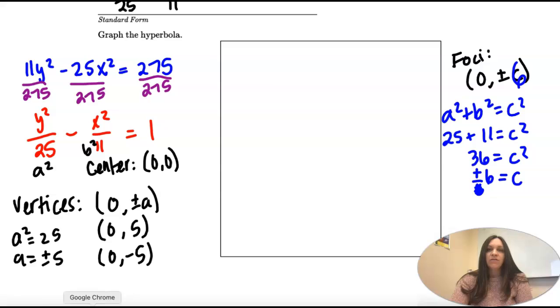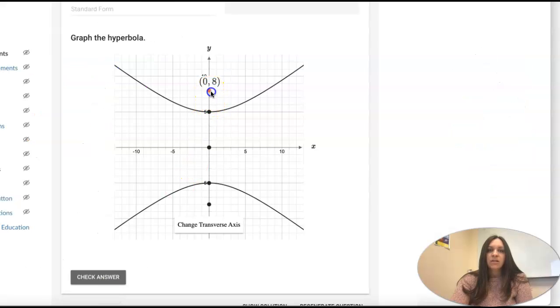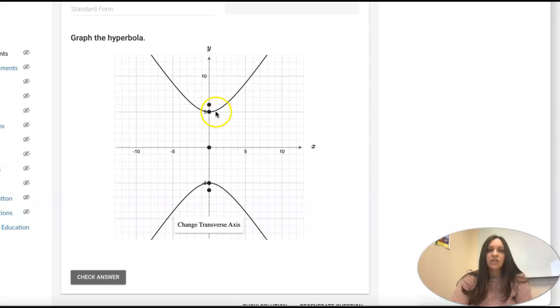So on my graph, I'm going to move these down to 6, and that changes how steep those curve.